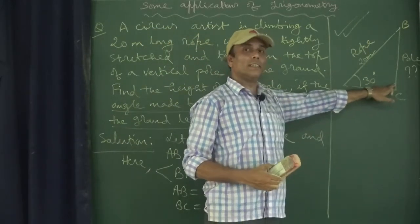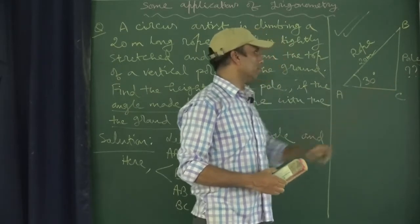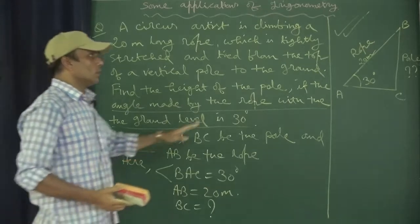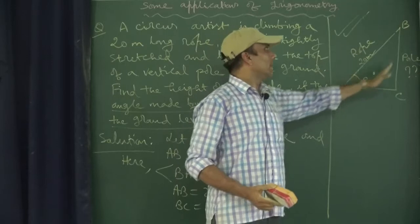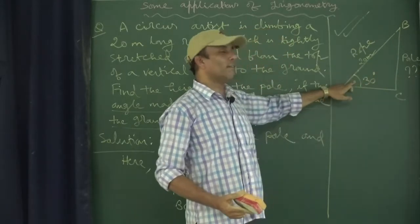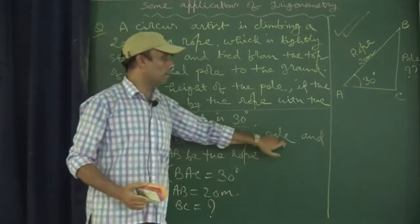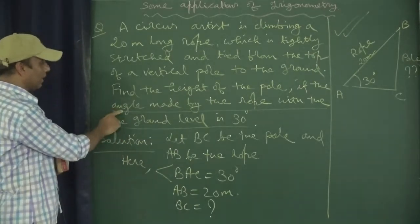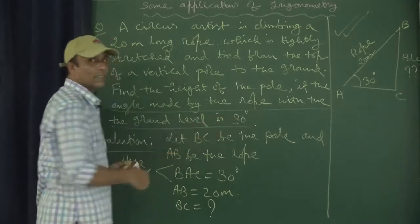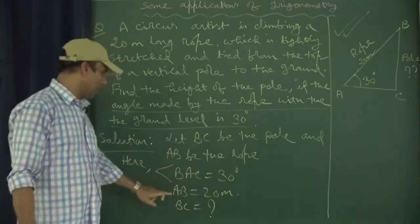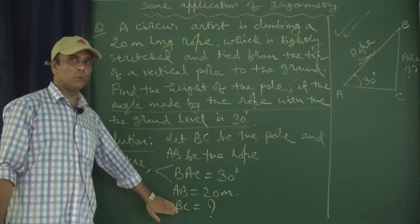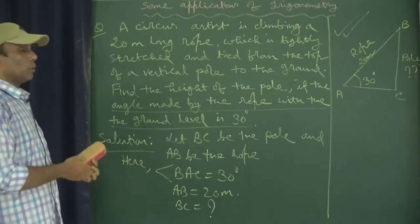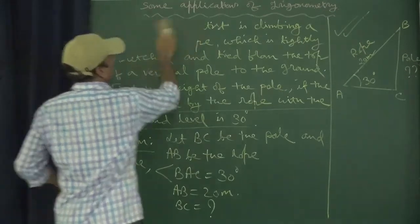It will always be considered as a right angle triangle, so this angle is always 90 degrees. Our aim is to get the value of BC. AB rope is 20 meters given, BC is the pole which we are asked to find, and angle of elevation is 30 degrees. The angle BAC equals 30 degrees because the rope makes 30 degrees with the ground level.